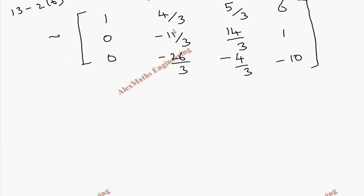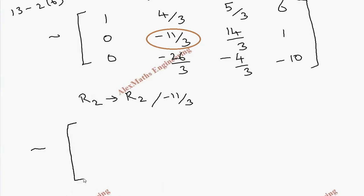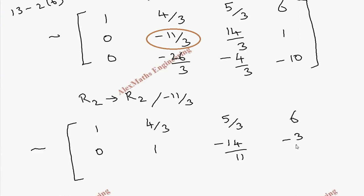Then we have to make the R2 pivot element equal to 1. For that we divide the entire R2 by -12/3. So R2 becomes: 0, 1, -11/3 divided gives -14/11, and -3/11. The R3 elements -26/3, -4/3, -10 are written as they are.